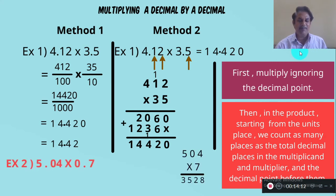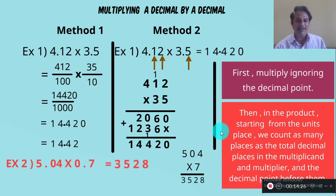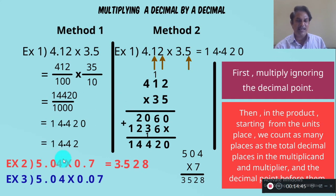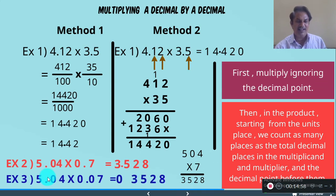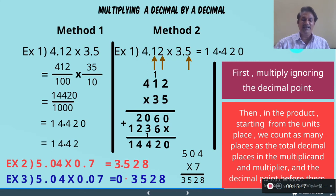Another example: 5.04 into 0.7. When we remove the point, you get 504 multiplied by 7. The answer is 3528. Now place the point: here there are two decimal places in 5.04 and one decimal place in 0.7, so there are three decimal places total. Keep the point so that there are three decimal places — the answer is 3.528.